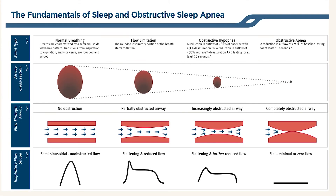Looking at the graph here, we have no obstruction, we have reduced flow, more and more work by the body, and we have a complete closure of the airway called obstructive sleep apnea. It's very handy to use a chart like this to illustrate this to your patients about what's going on, and to train your team so everybody can know about how sleep apnea can affect the body.